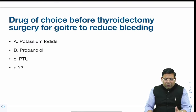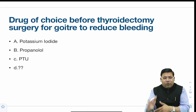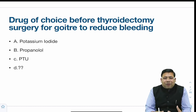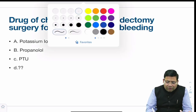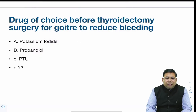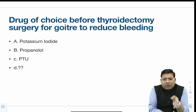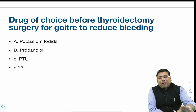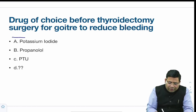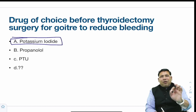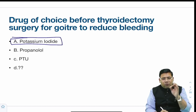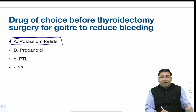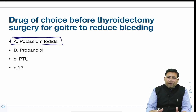There was a question on the drug of choice before thyroidectomy to reduce bleeding. This is a controversial question — it could be potassium iodide or PTU. The concept of the drug is not to reduce bleeding but to attain a euthyroid status. To achieve euthyroid status, carbimazole or methimazole would be good, but to shrink the function of the gland, potassium iodide (KI) is the ideal option, exploiting the Wolff-Chaikoff effect.